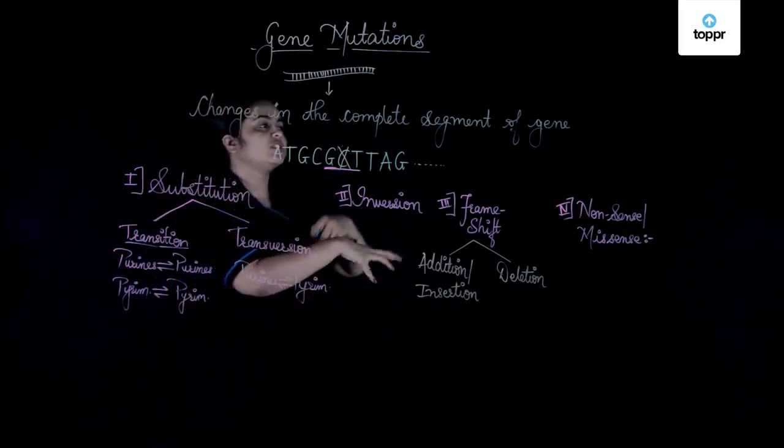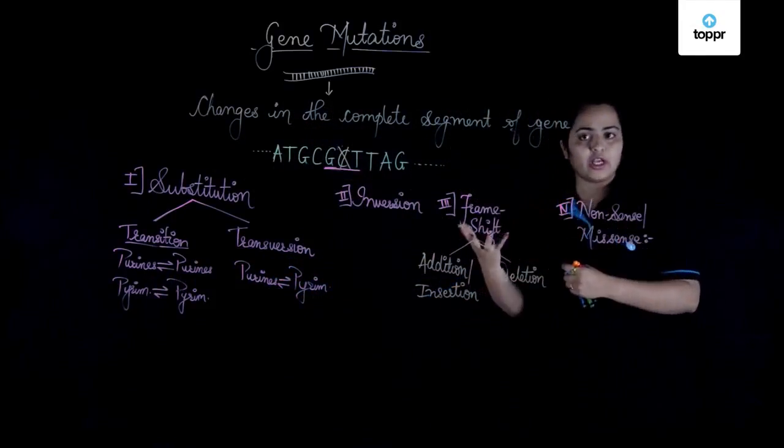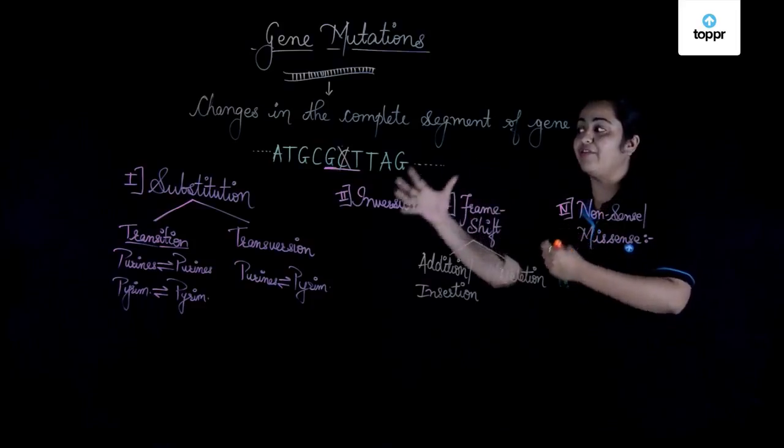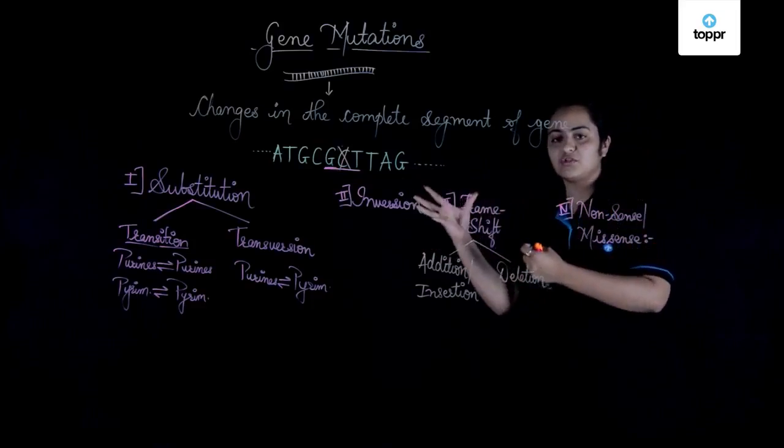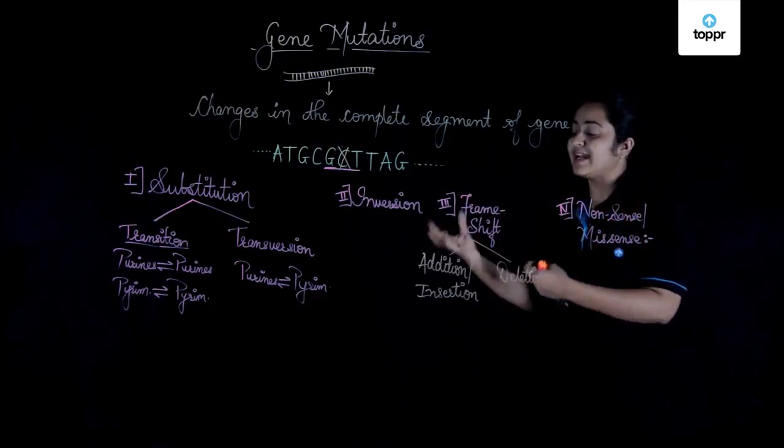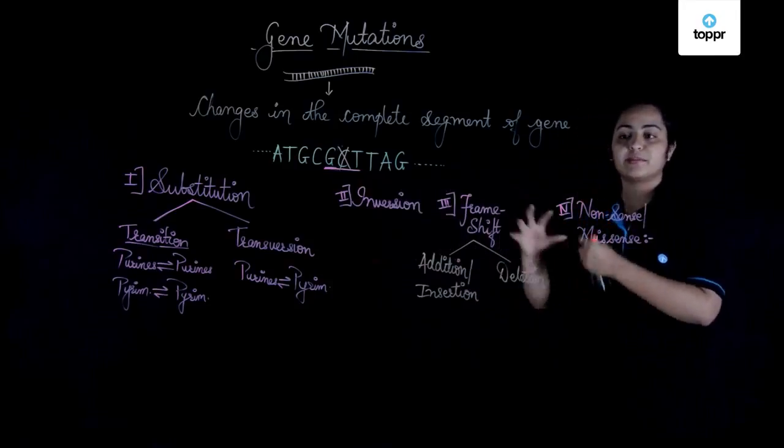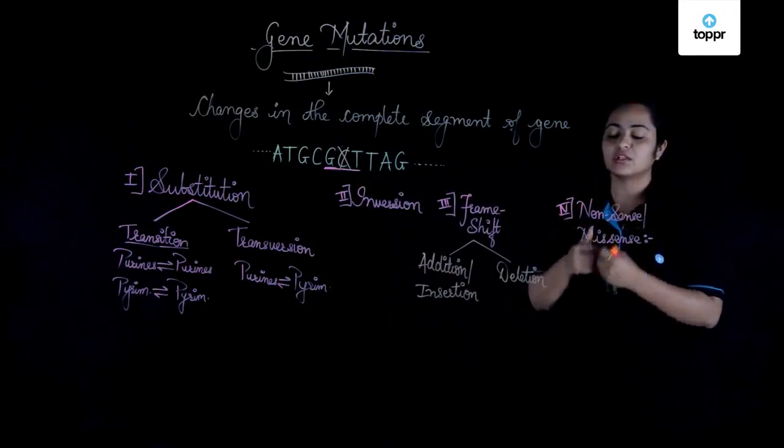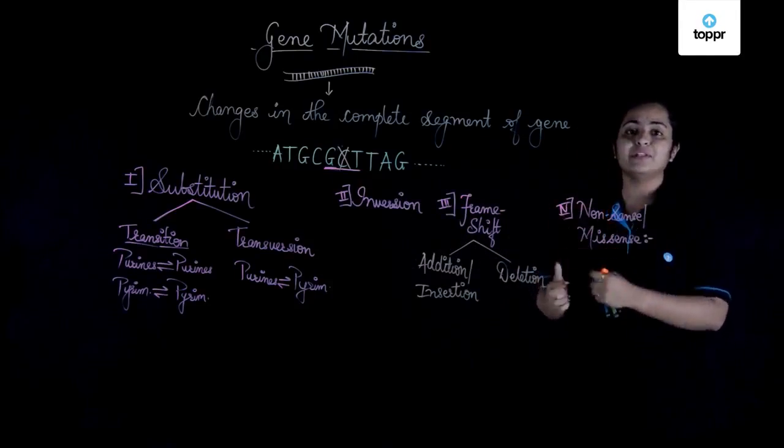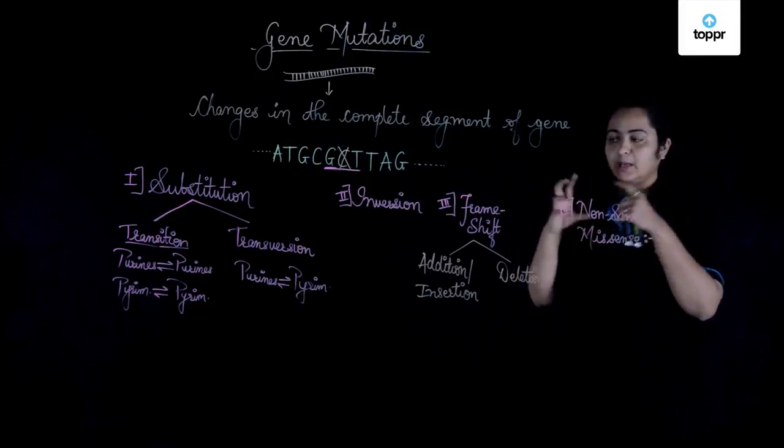This was about the four different types of gene mutations which can occur. Gene mutations or changes in the genes in the complete segment of the DNA is what we are talking about. In this, we can have four major types: that is substitution, a purine by a pyrimidine or purine by purine or pyrimidine by pyrimidine; we can have inversion of the complete gene sequence; we can have shift in the frame of codons by either addition or deletion of these codons; or we can have nonsense and missense mutations which occur in the complete segment of DNA in the complete gene.